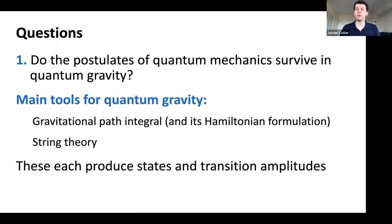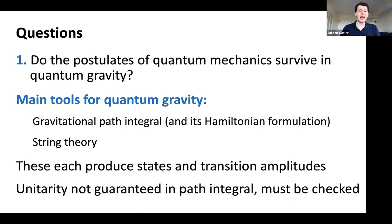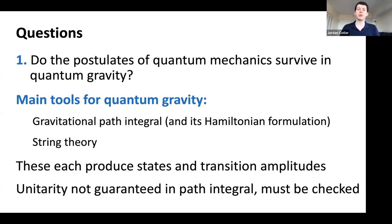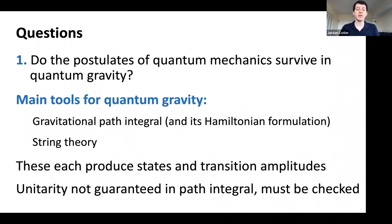Our main tools for quantum gravity include the gravitational path integral and its Hamiltonian formulation, as well as most notably string theory. These produce states and transition amplitudes — the gravitational path integral and string theory allow us to compute transition amplitudes between classes of states. However, unitarity is not guaranteed in the path integral and must be checked. Whether it's a gravity path integral, an effective field theory, or string theory, unitarity cannot be taken for granted — you need to verify that the amplitudes satisfy unitarity constraints.